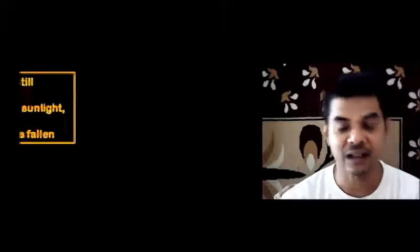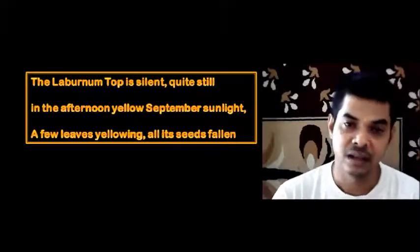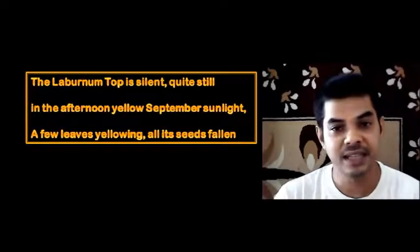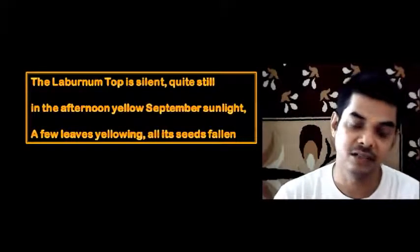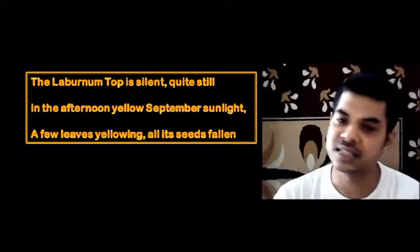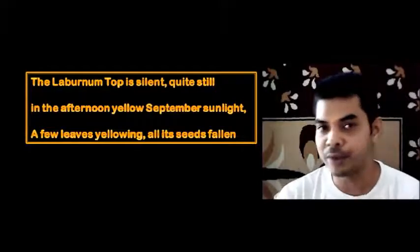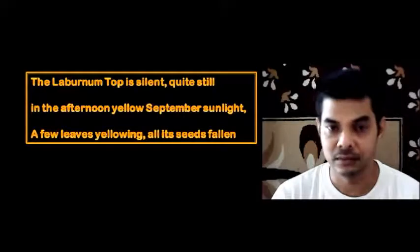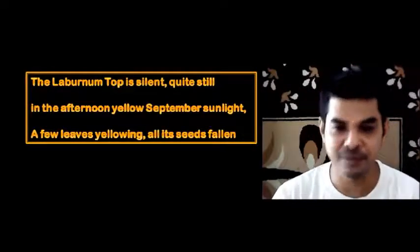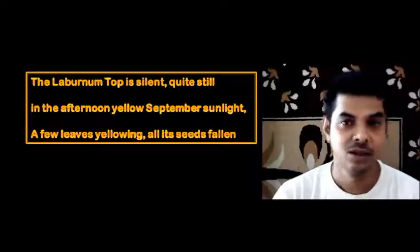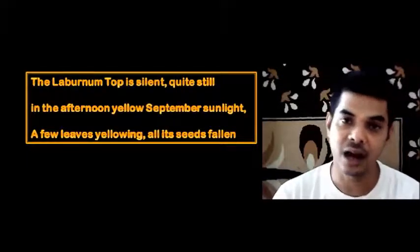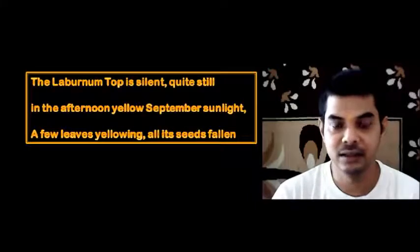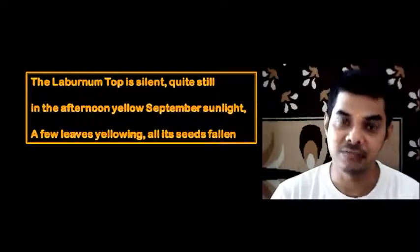Let's begin the line-by-line discussion. The poem opens: 'The laburnum top is silent, quiet, still in the afternoon yellow September sunlight, a few leaves yellowing, all its seeds fallen.' The poem begins by depicting a picture of the laburnum tree in its surroundings — it's pretty, but it is silent, as if life has been drained out of it.